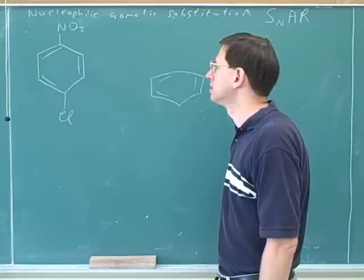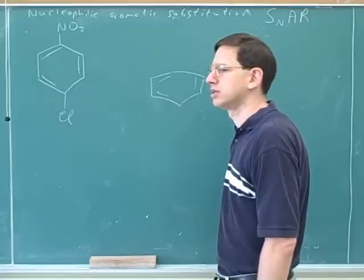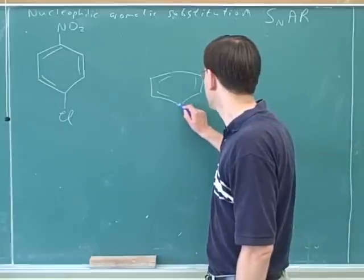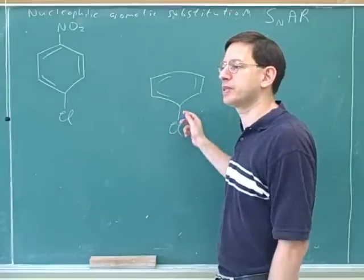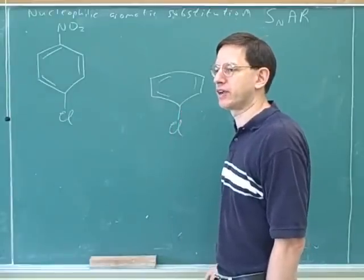Because if you put the NO2 on first, the Cl would be meta. Oh, a chlorine as a director wouldn't it go ortho para? So if we put the chlorine on first, now if we try to put, oh yeah, you're right. Now you can put the nitro group on and this would be an O and P director.